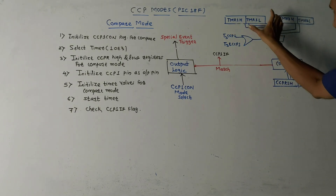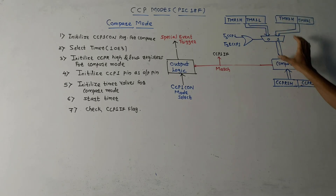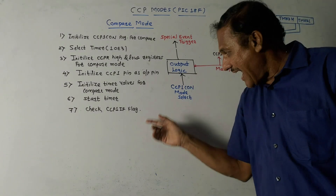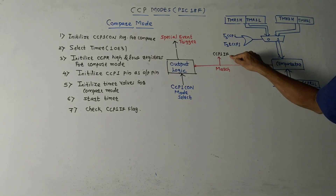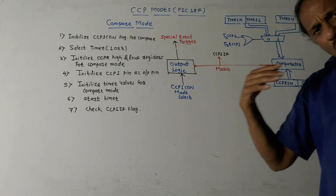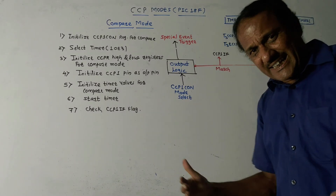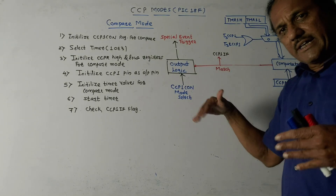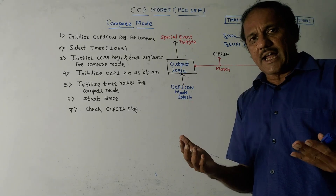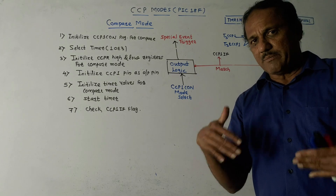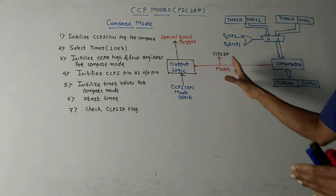Whenever a matching is detected, a particular flag — CCP1IF, the compare flag — is triggered. Depending on the values, the trigger signal can be generated: this flag can be set to high or set to low.